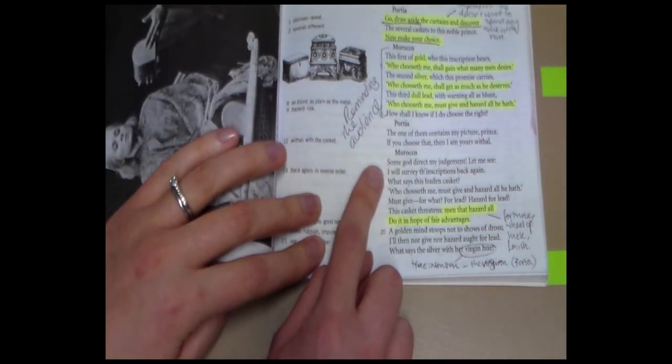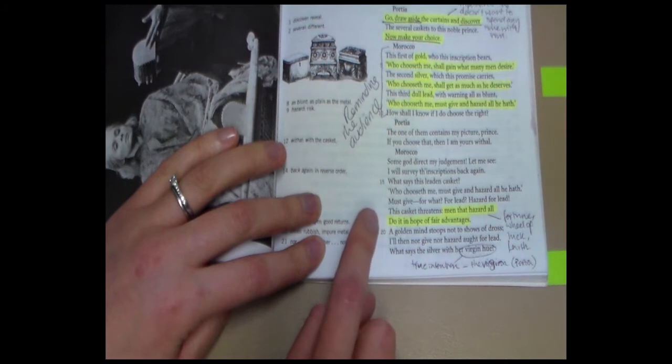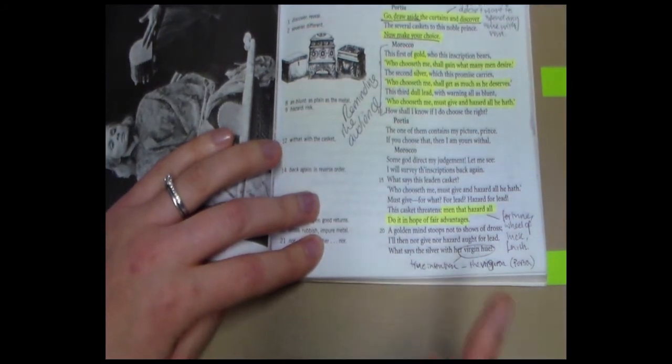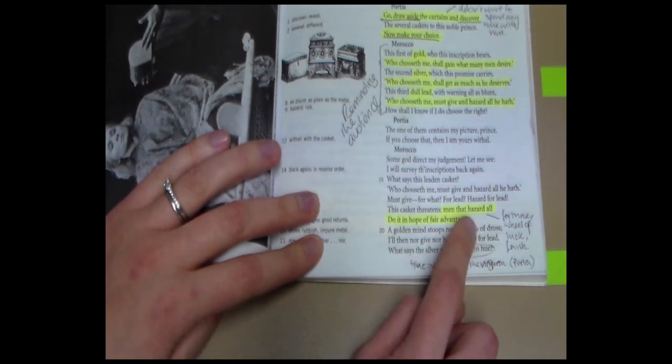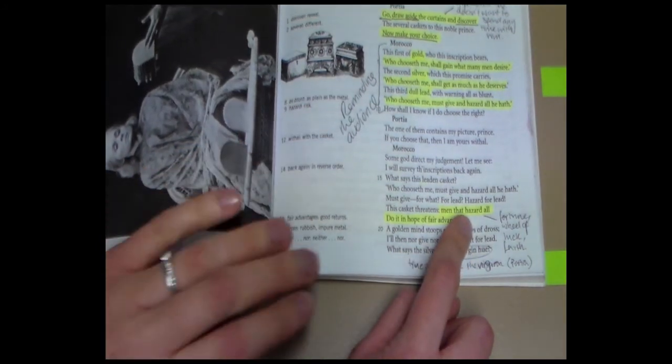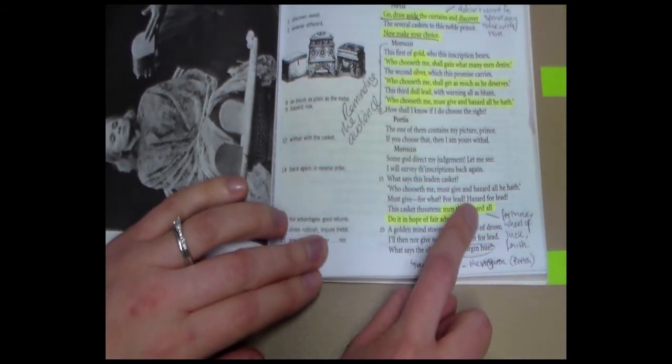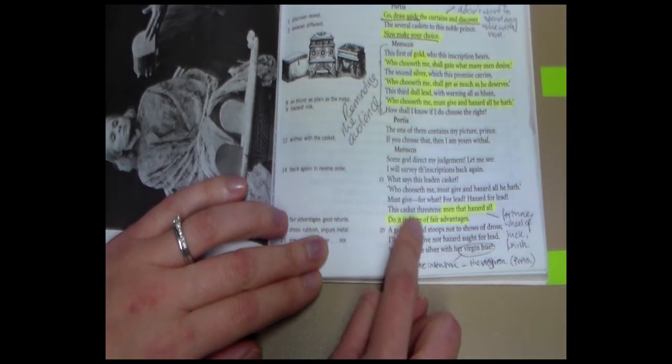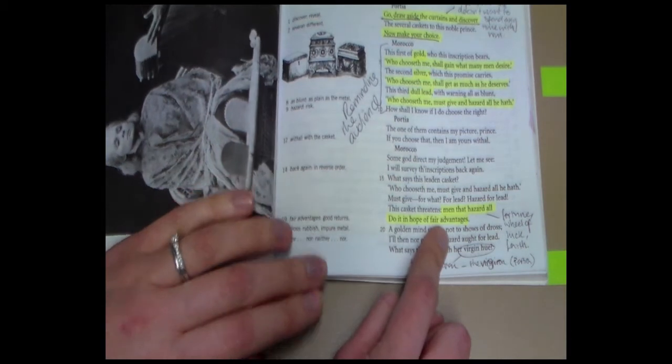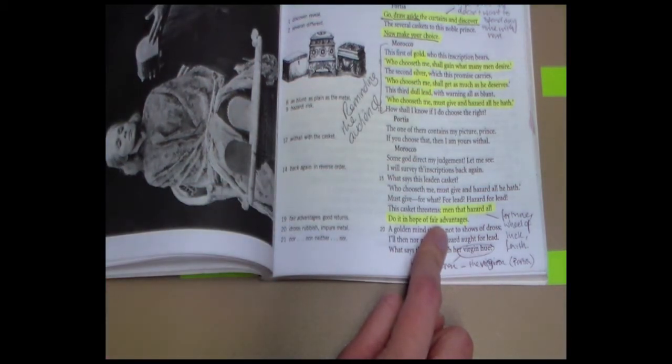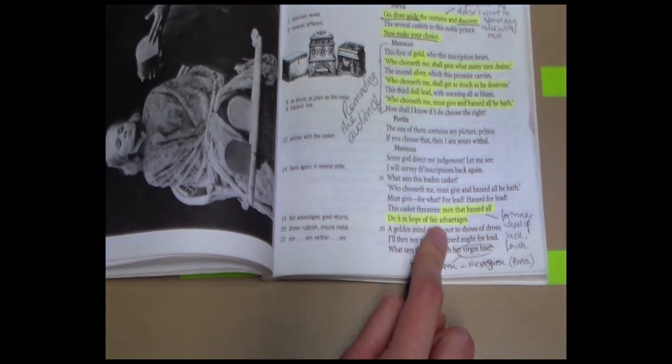Morocco starts talking about the different caskets and how he views those caskets, what he thinks of them. He starts at the bottom, the cheapest. He starts with lead and he's quite shocked at the idea that he would hazard for lead. He says that this casket threatens men that hazard all do it in hope of fair advantages. He doesn't like the idea of fate or of fortune or of luck and we've seen that this is a theme that's taken us through each one of the scenes but he doesn't like the idea that he may lose something. He's not prepared to hazard.